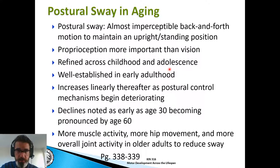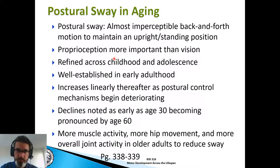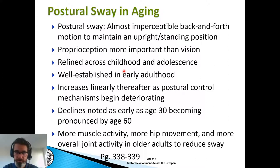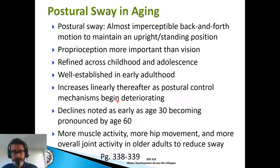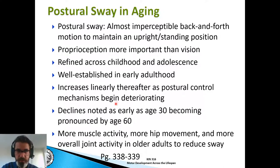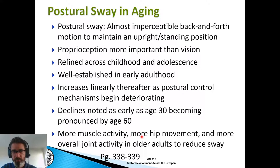Postural sway is that imperceptible back-and-forth motion — you're never perfectly still. Proprioception is more important than vision. Postural sway is refined across childhood and adolescence, and when you become an adult, that's when you have the least variable, smallest amount of postural sway. It then increases linearly thereafter as postural mechanisms begin to deteriorate. These declines can occur as early as age 30, but become most pronounced by age 60. More muscle activity, more hip movement, and more overall joint activity in older adults helps to reduce the sway.